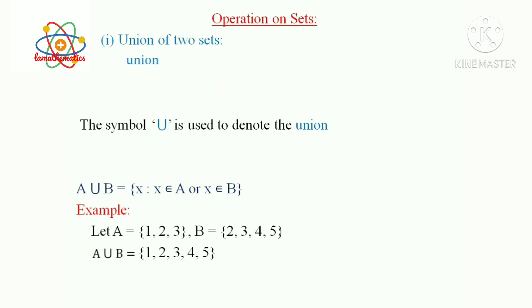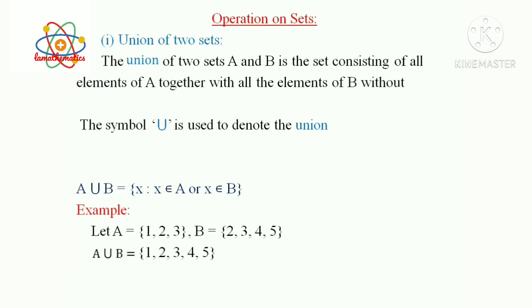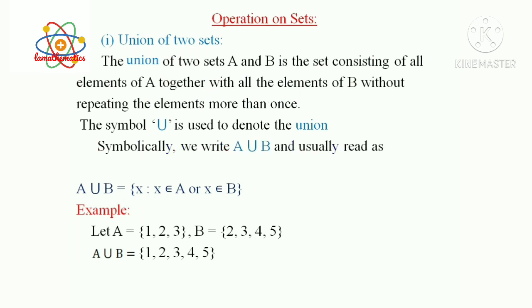Then we define the Union of Two Sets. The union of two sets Capital A and Capital B is the set consisting of all elements of Capital A together with all the elements of Capital B without repeating the elements more than once. Symbolically, we can write A ∪ B and usually read as A union B.